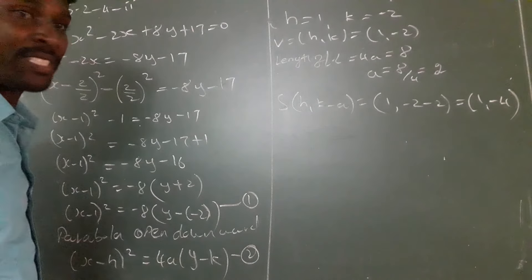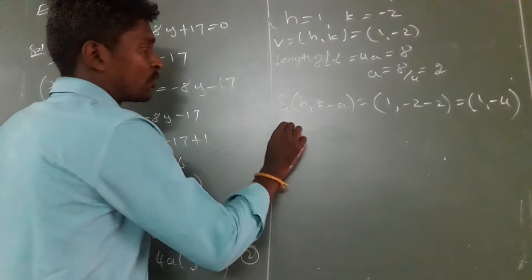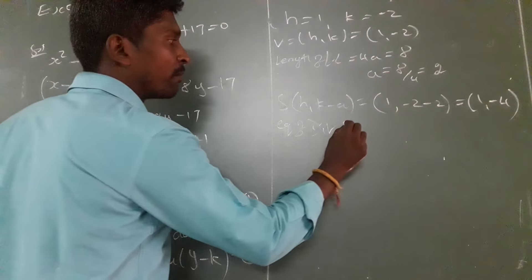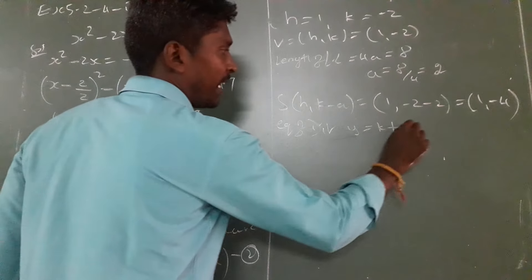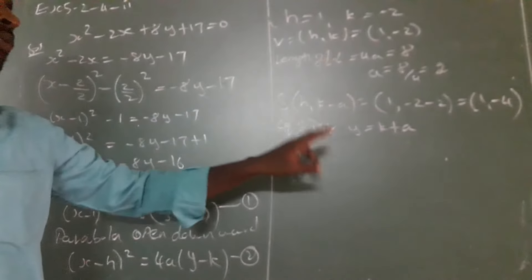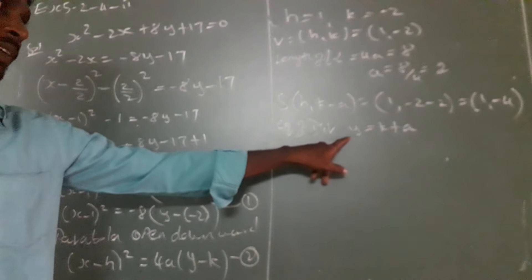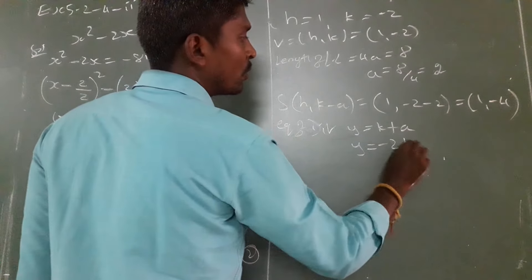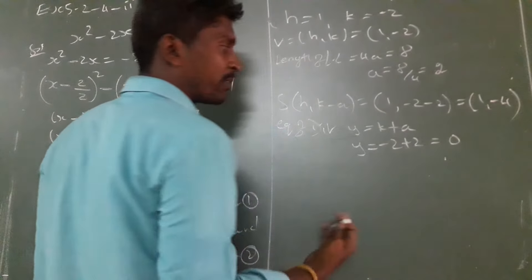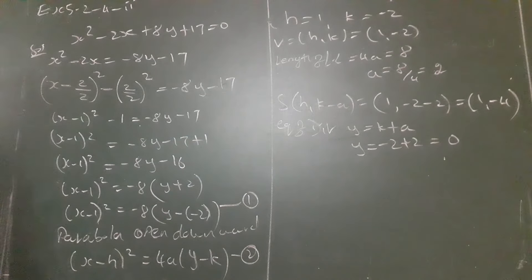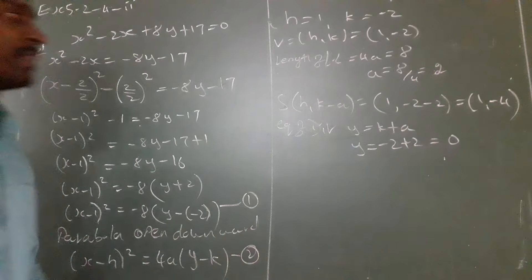Now we want to write the equation of the directrix. For an open downward parabola with vertex (h, k), the equation of the directrix is y equals k plus a. Substituting: k equals minus 2 and a equals 2, so y equals minus 2 plus 2 equals 0. That means the x-axis becomes the directrix of the given parabola. So y equals 0 is the equation of the directrix.